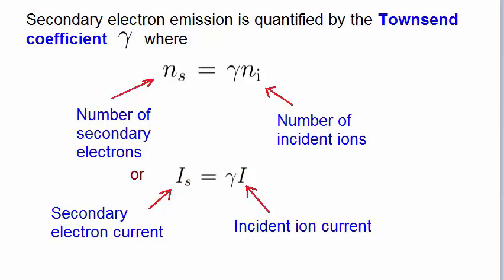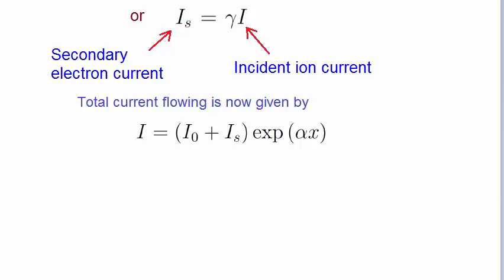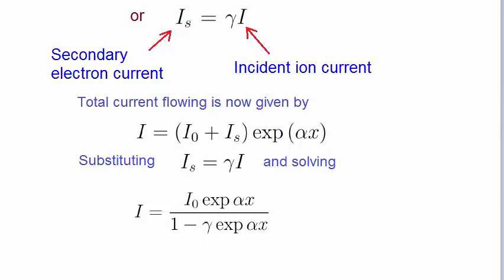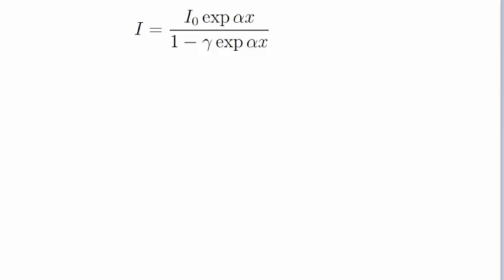We can now modify our previous expression for the current by adding the additional current Is to I0. We now substitute the expression for the secondary electron current and solve for I. We obtain this expression. Now, breakdown of the gas occurs when there is a large spike in the initial current, as the electrons are swept away by the electric field and a rush of secondary electrons arise from the cathode. To quantify this, we say that the initial current goes to infinity. In fact, it doesn't go to infinity, but it does go to a very large spike in current. If the plasma was allowed to continue in that way, then it would result in an arc.